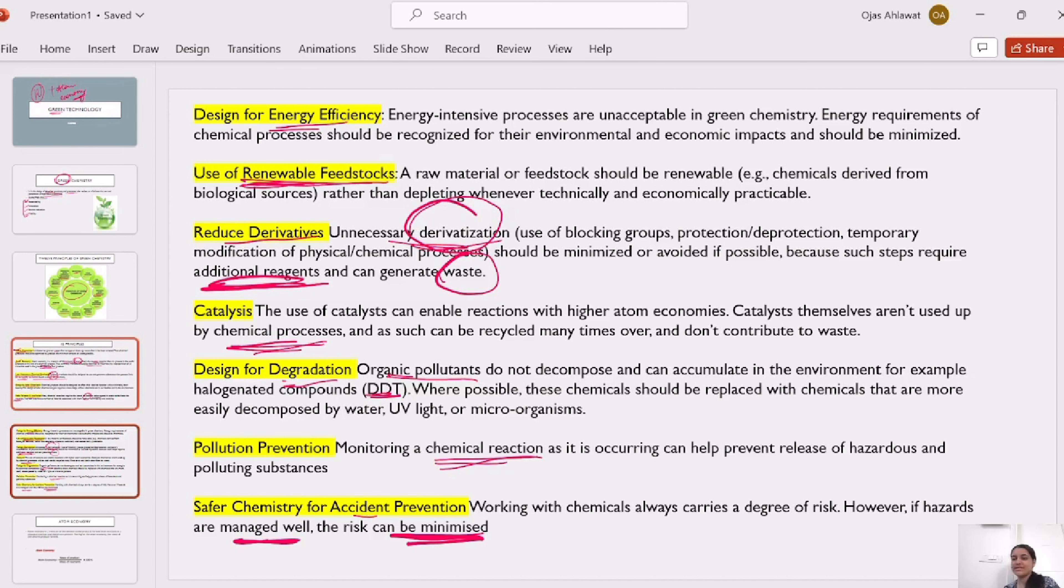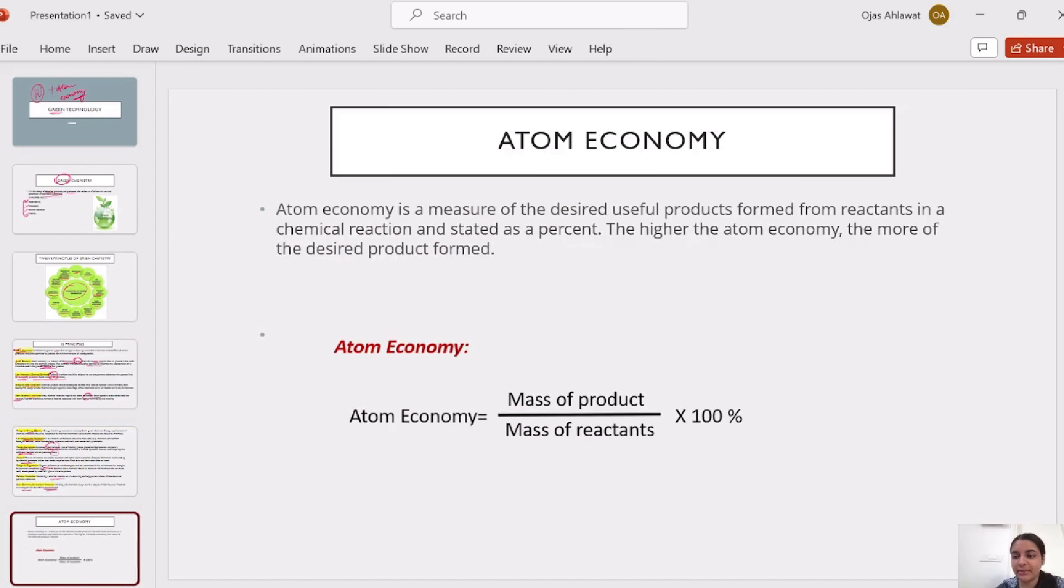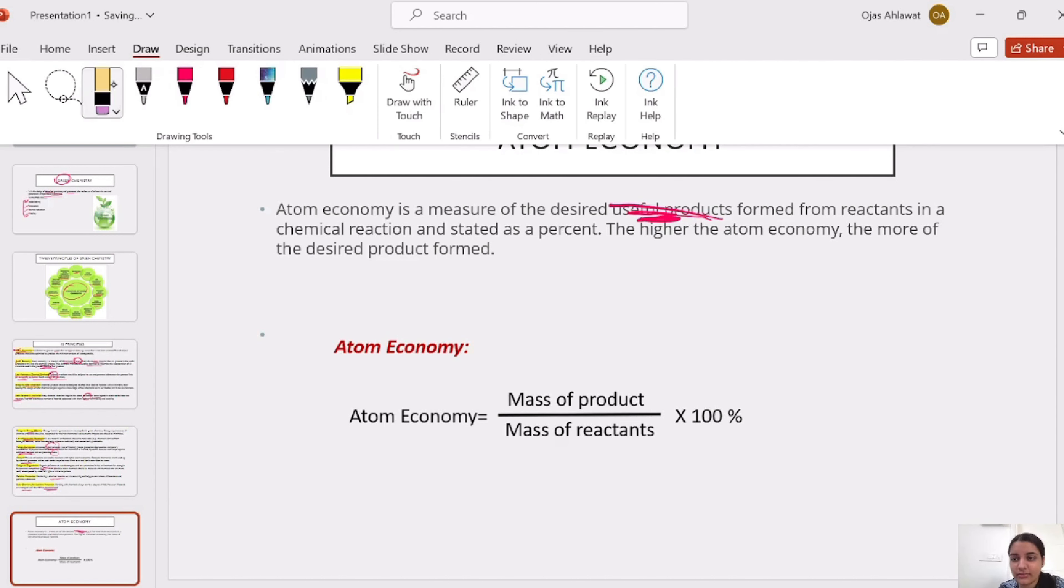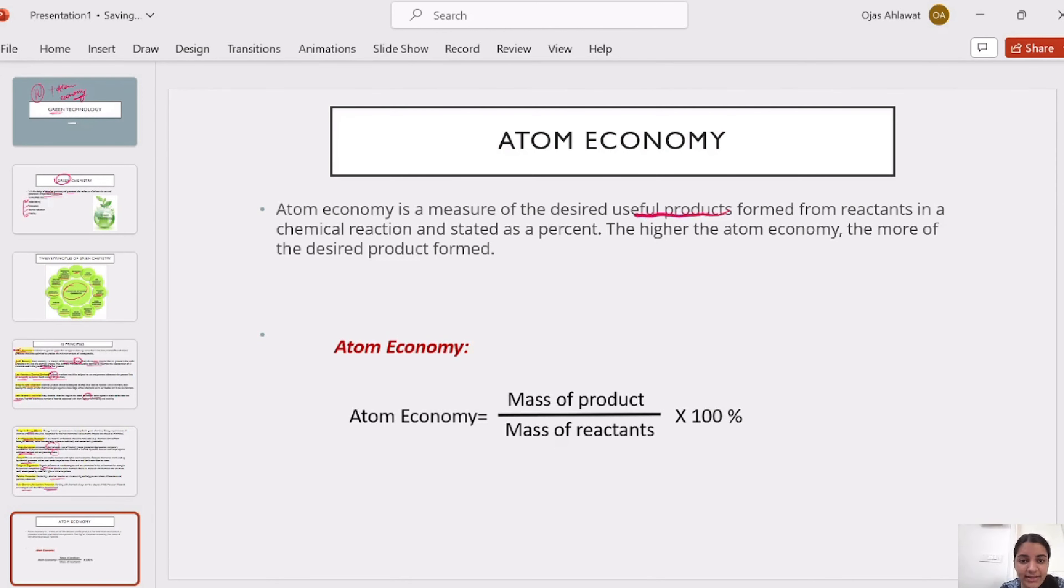These were your 12 principles. These are just these principles. And, we have to learn an atom economy. Atom economy is, measure of desired useful product, which is formed with reactants. One second. Designed useful product, associates in chemical process from allergens. The higher the atom economy, the more the desired product.